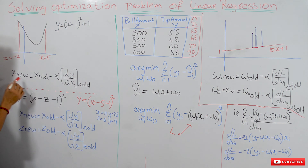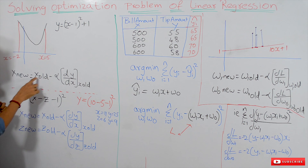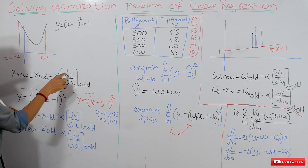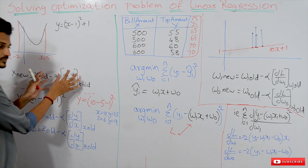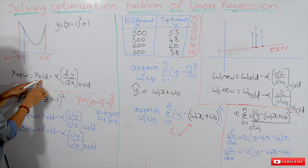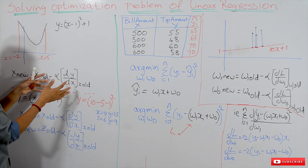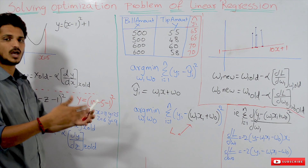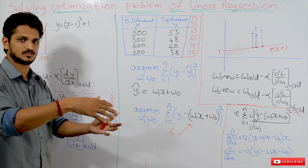That's how we get this formula, which was already discussed in our last class: x_new is equal to x_old minus alpha times dy/dx. If the derivative is positive, we are reducing x. If the derivative is negative — negative times negative is positive — we are adding to x_old, meaning we are increasing x.